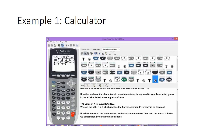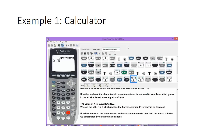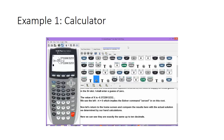Let's return to the home screen and compare the result with the actual solution we determined by hand. We'll hit second and mode, call up the x value, and then type in our hand-calculated eigenvalue: 5 minus the square root of 33, divided by 2. We can see they are exactly the same up to 10 decimal places.